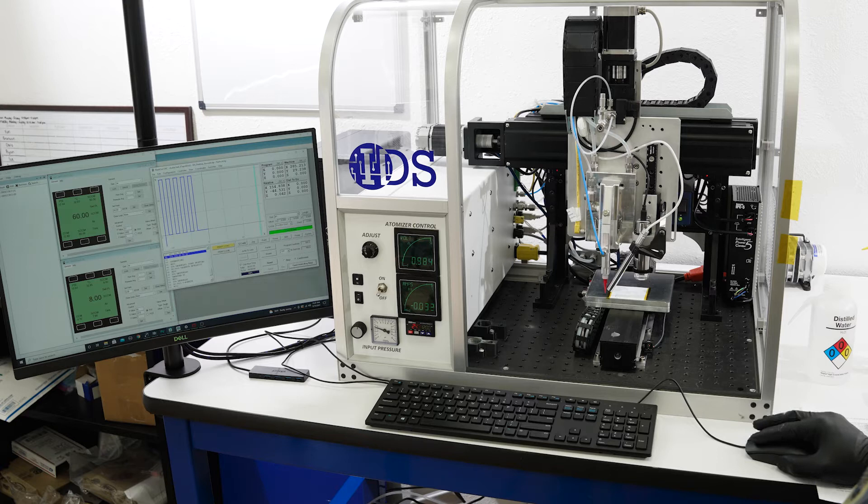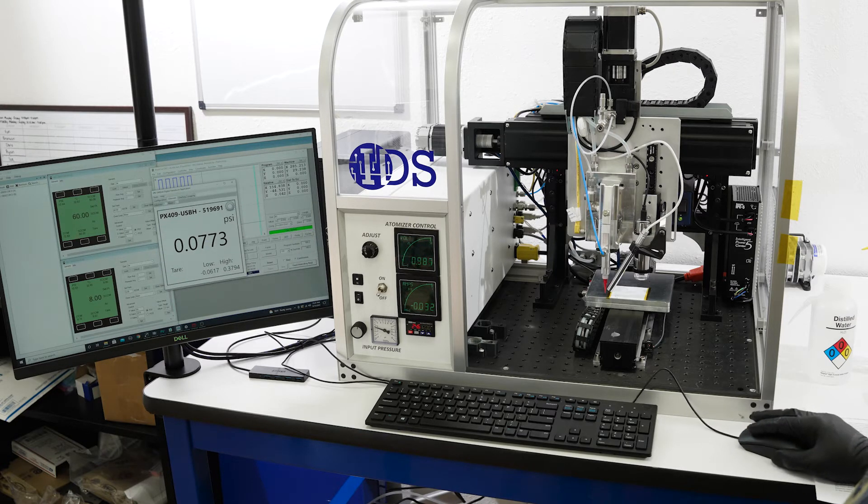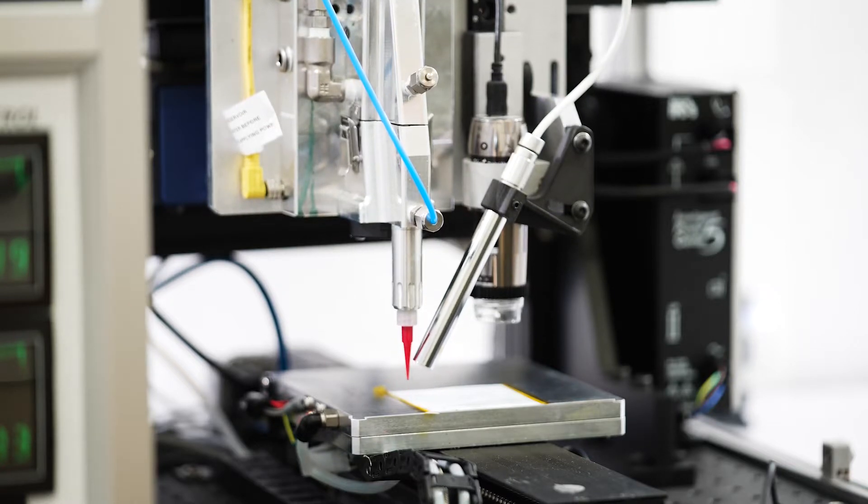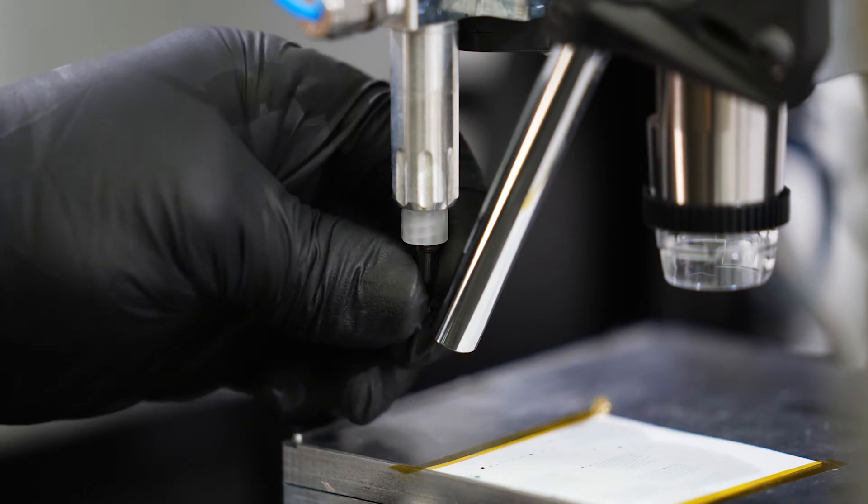The leak test is performed using the pressure transducer software installed on the system. With the cartridge installed in the atomizer base, the first thing to do is to replace the dispense tip with a luer plug, as shown.